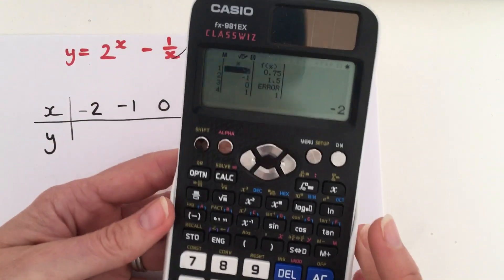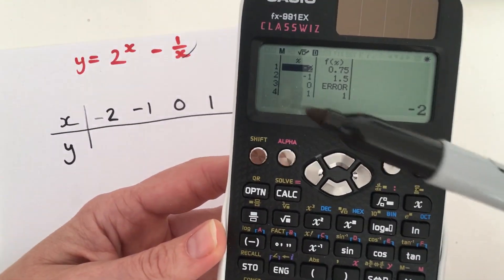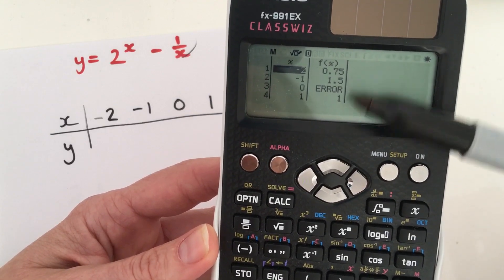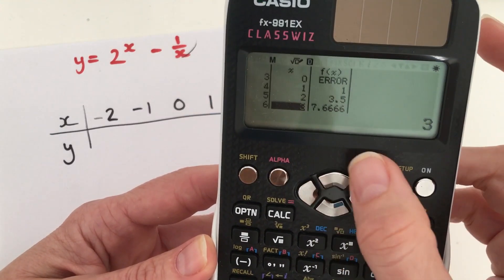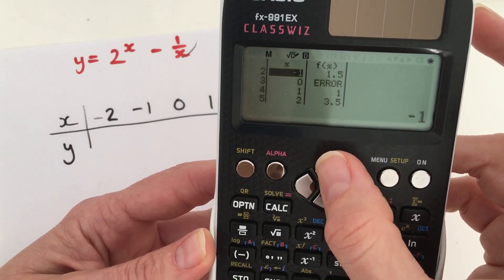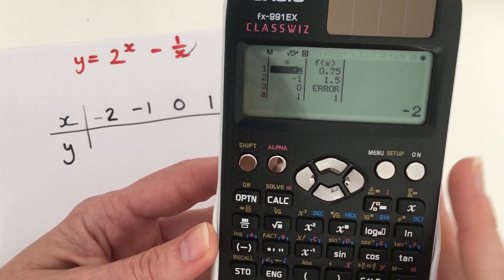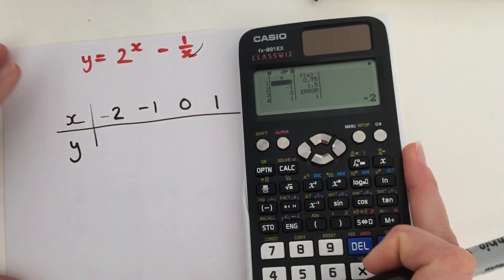Then what we have is we have our x values here with our corresponding y values. And you can arrow down to find all of the values if they're not all on one screen. So, I'm going to now go ahead and I'm going to fill in my table.